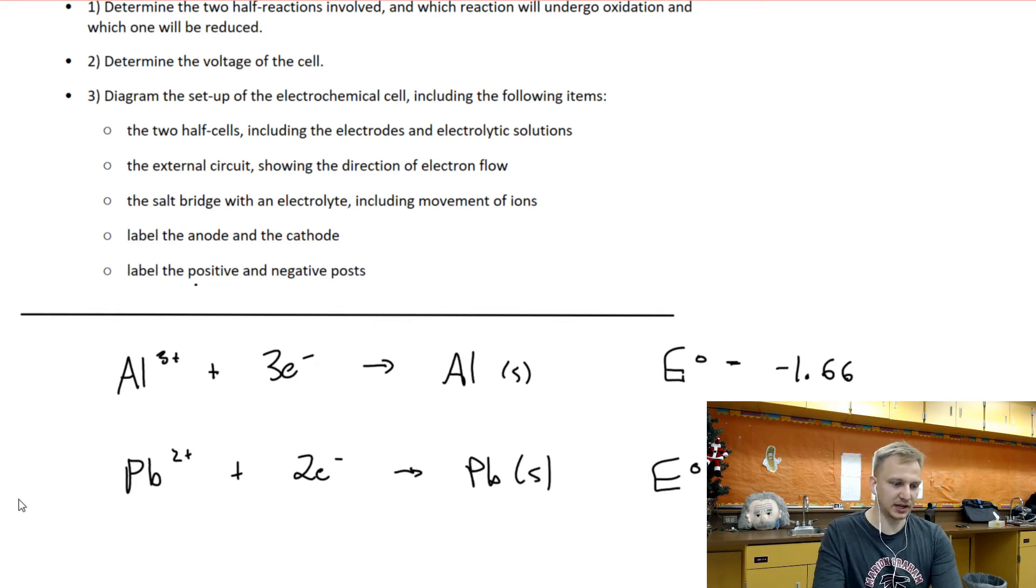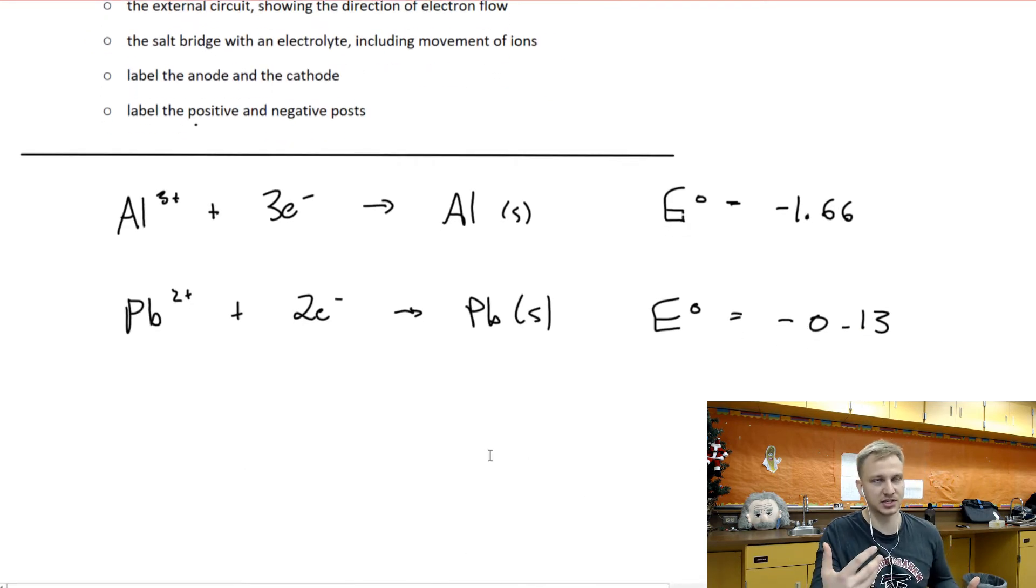And so what we need to do with this part here, one of the key parts of this particular question, is that in order for this reaction to happen, we need to have a positive potential difference. What you'll also notice right now is that in both of these reactions, both of them are gaining electrons. So if we think about Leo-Ger, gain of electrons is reduction. Right now both of these are being reduced. We need one of them to be oxidized.